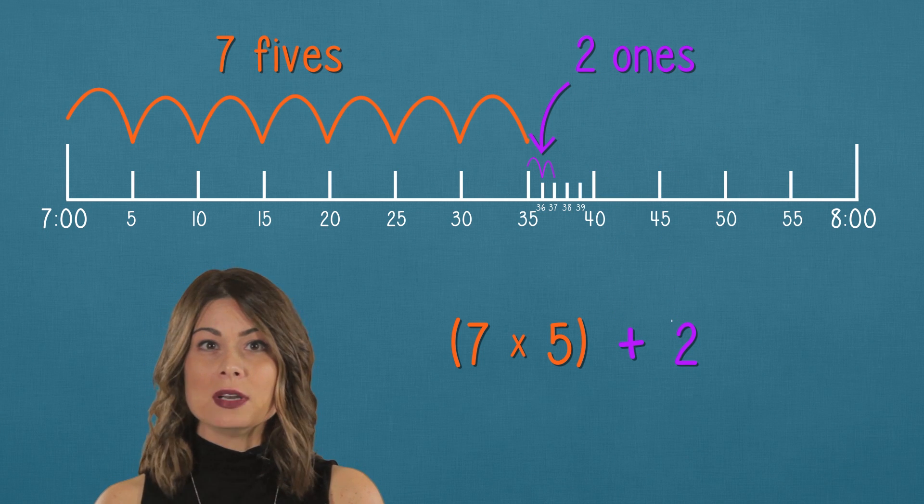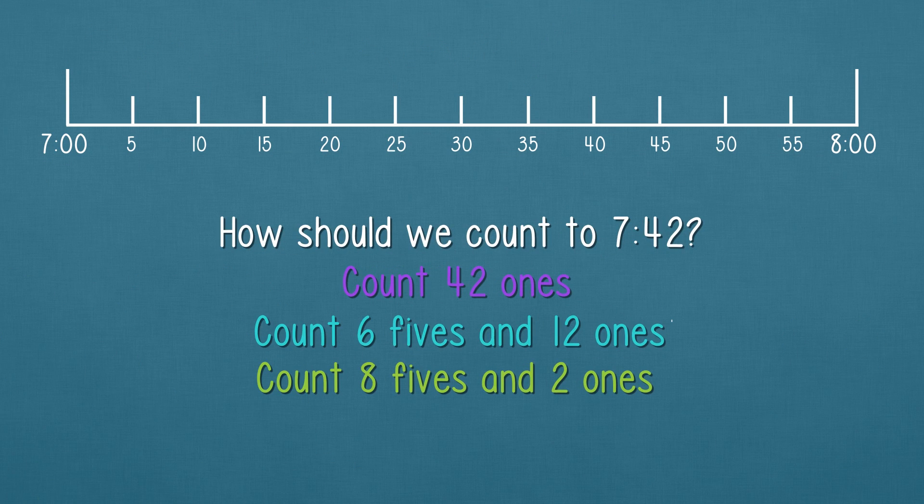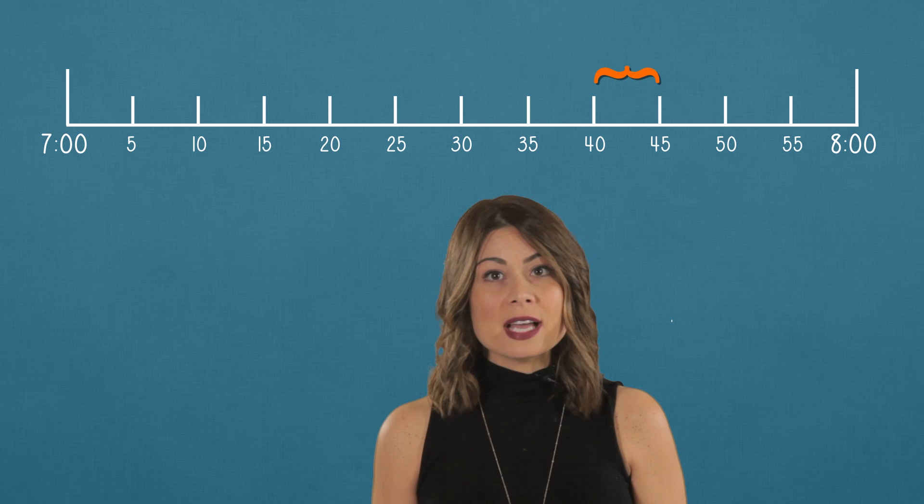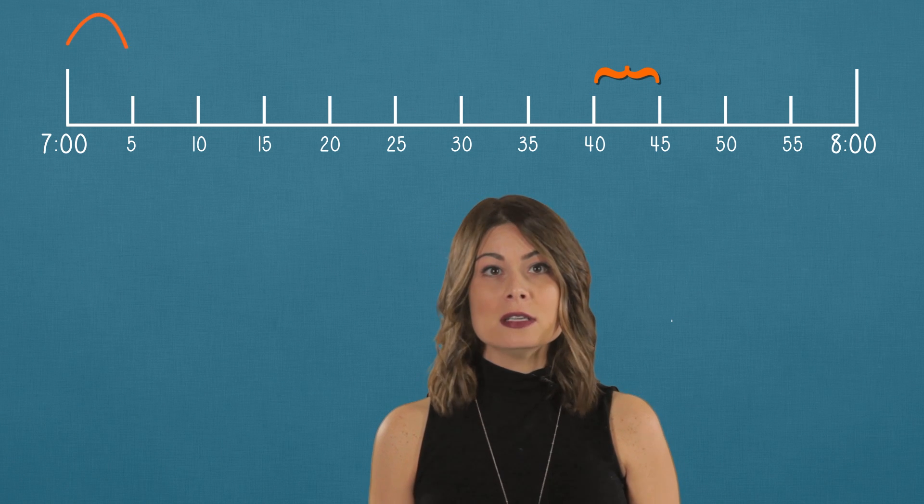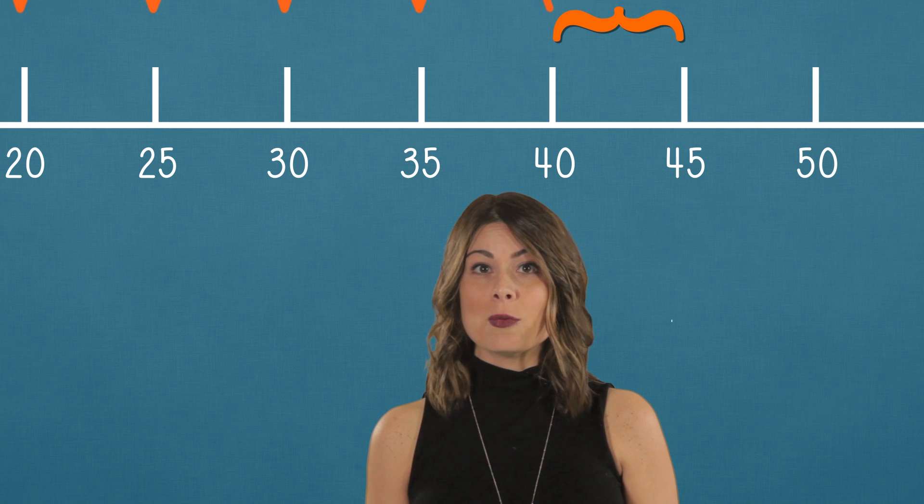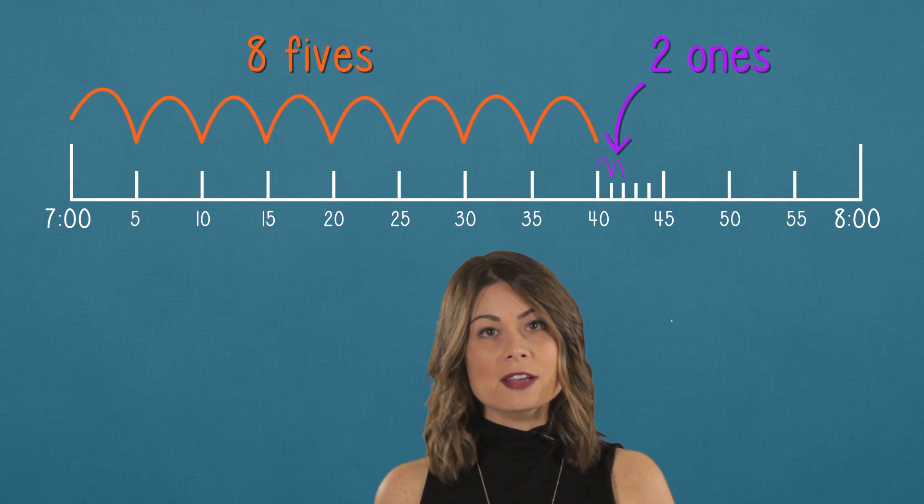Try one on your own. How can we count to 7:42? To get to 42 minutes, we'll need to end up between 40 and 45. So let's count to 40 by fives. That's one, two, three, four, five, six, seven, eight fives. Then we draw in our new tick marks for ones. Then count one, two, to 42. That's eight fives and two ones. Great job. I think you've got the hang of it.